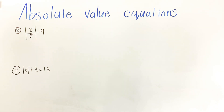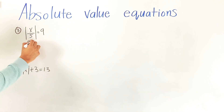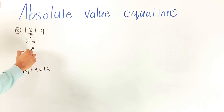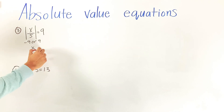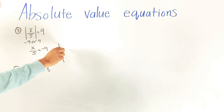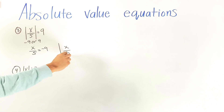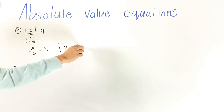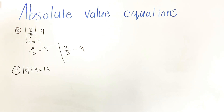For number three, we have the absolute value of x divided by 5 equals 9. And for number four, we have the absolute value of x plus 3 equals 13. Starting with number three, it's going to be either negative 9 or positive 9, so we write two equations: x over 5 equals negative 9, and x over 5 equals positive 9.